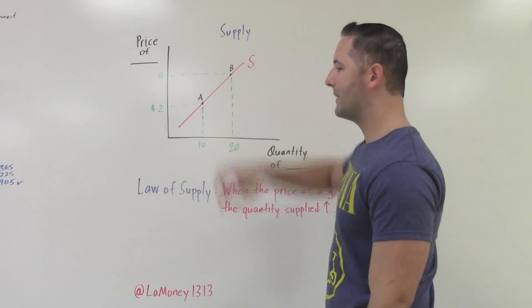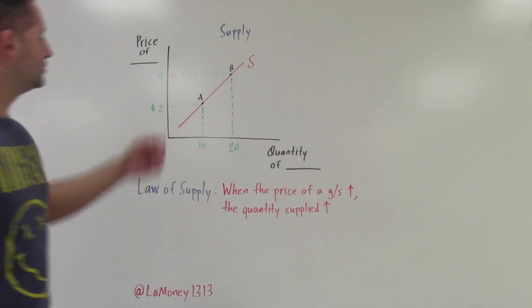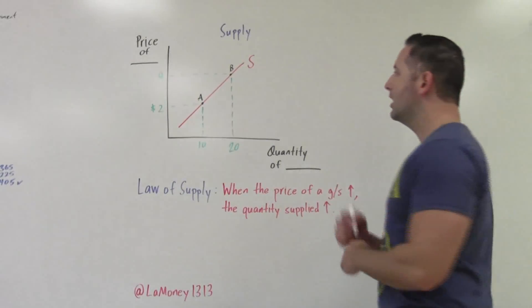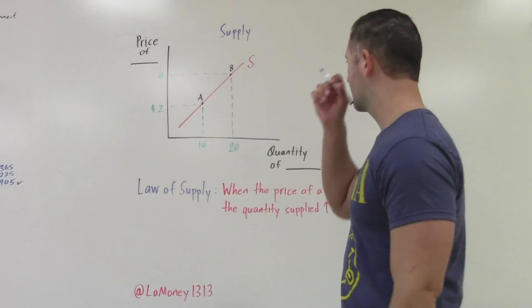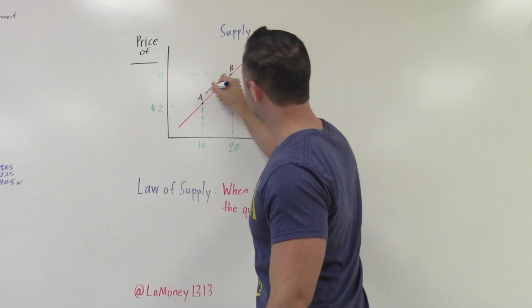So moving from A to B, like we did before, we're dealing here with a change in the quantity supplied, or a movement along the supply curve. Two ways to express that. We can have an upward movement.